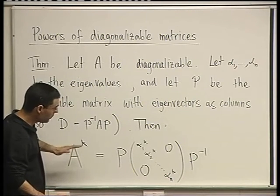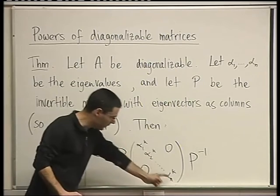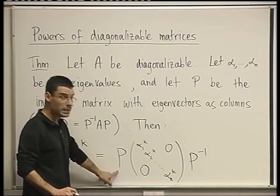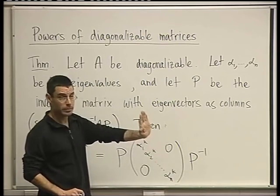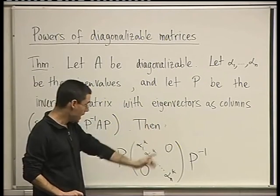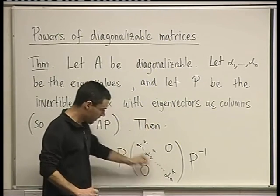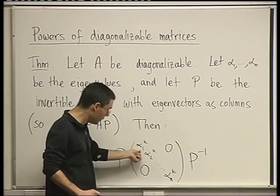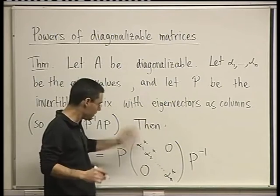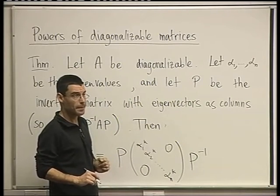So if you've already found the alphas and found P, you need to calculate P inverse once. That you do need to do. And then this is just a very simple thing to do. Take the alphas, raise them to the power K. That's a number. If α₁ is 2, 2 to the power K, whatever K is, that's the number that's going to sit here.